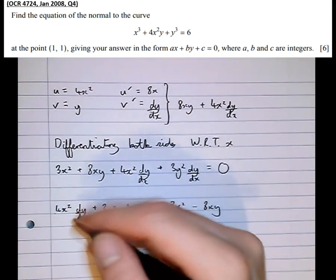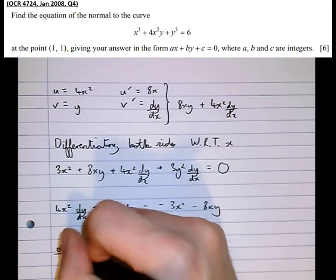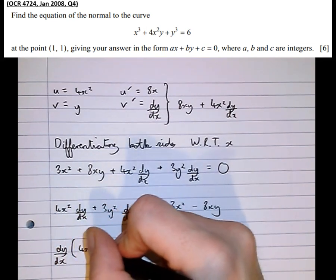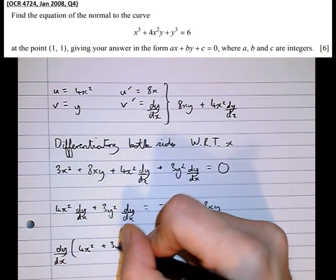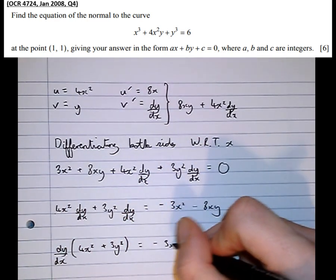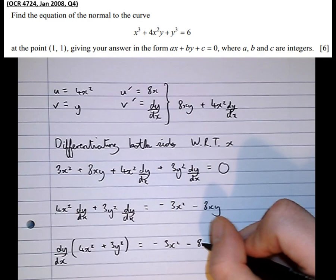Factorizing out dy/dx, we get dy/dx bracket 4x² plus 3y² equals minus 3x² minus 8xy.